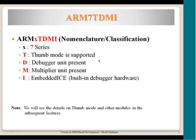'D' is a debugger unit present in the processor, so that as a developer we can run our code on the target platform, single-step it, execute one instruction after another, and see the register contents to find and fix bugs. 'M' is a high-performance multiplier unit, and 'I' stands for embedded ICE, which is a hardware-based debugger. These are all for debugging and performance purposes — just an introduction to ARM's naming nomenclature.